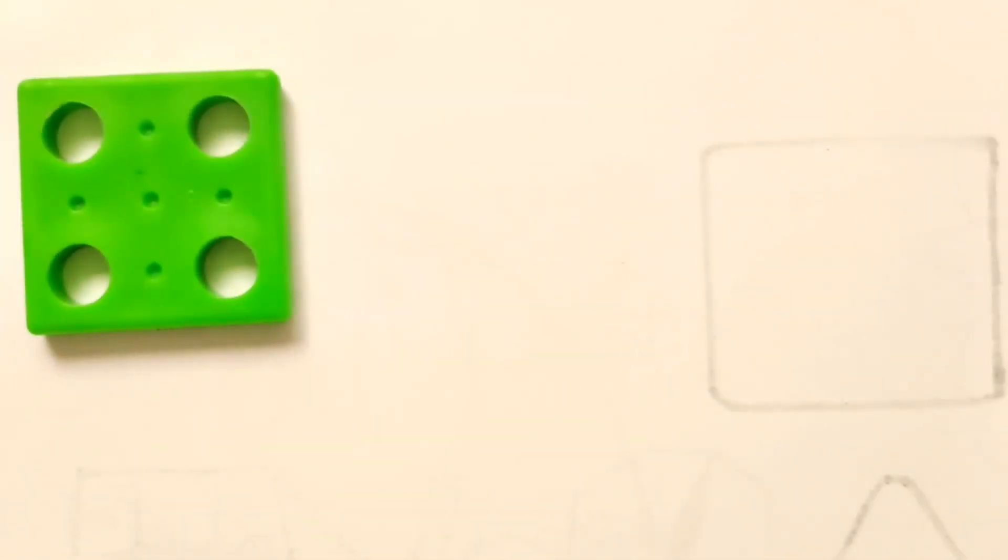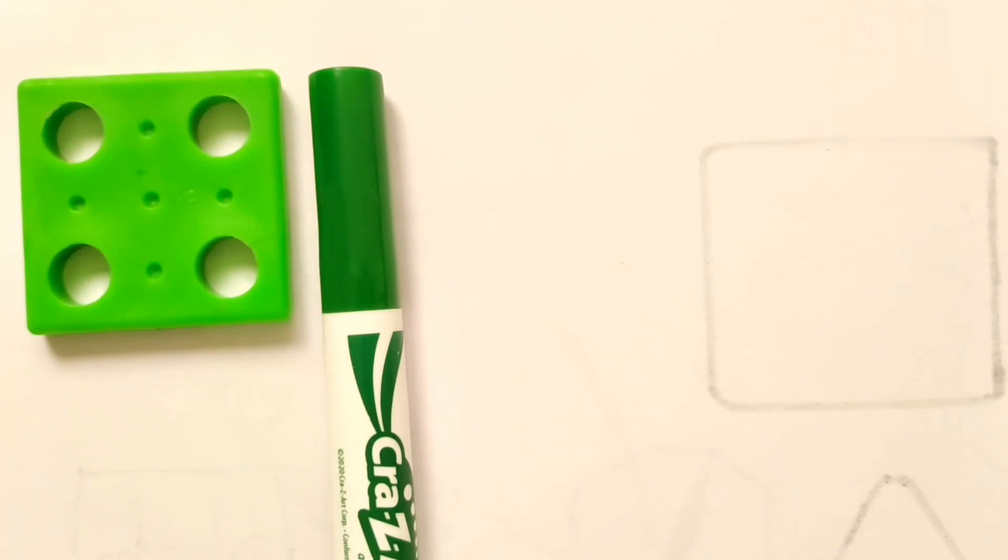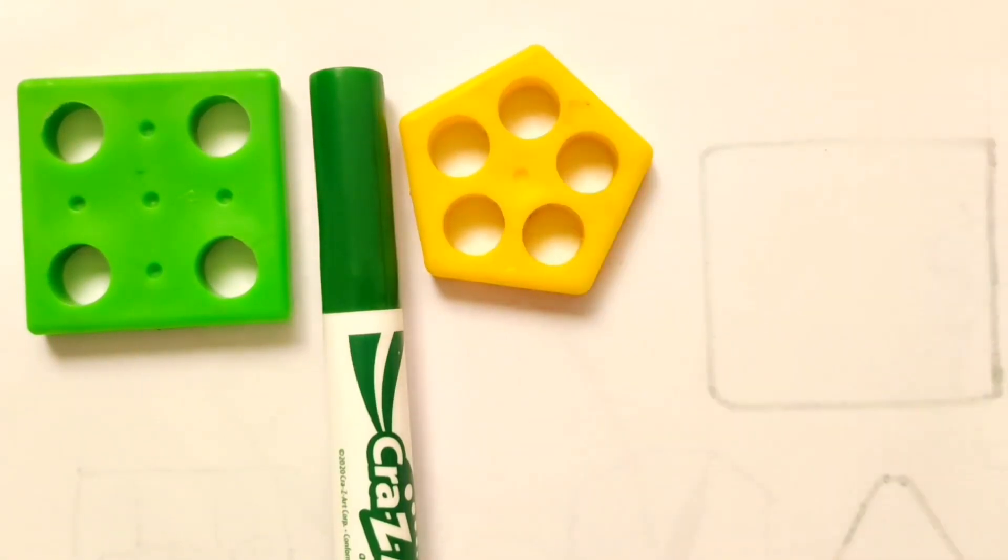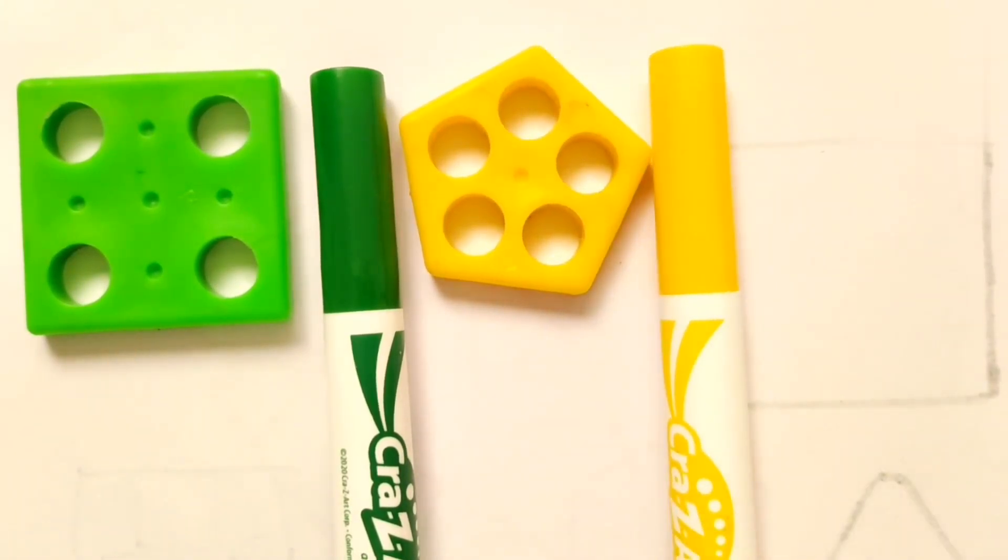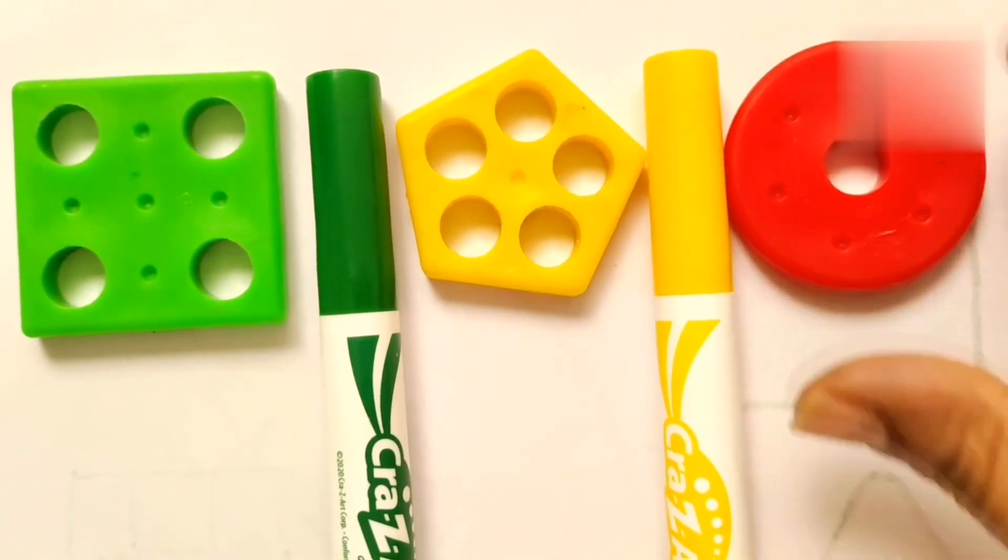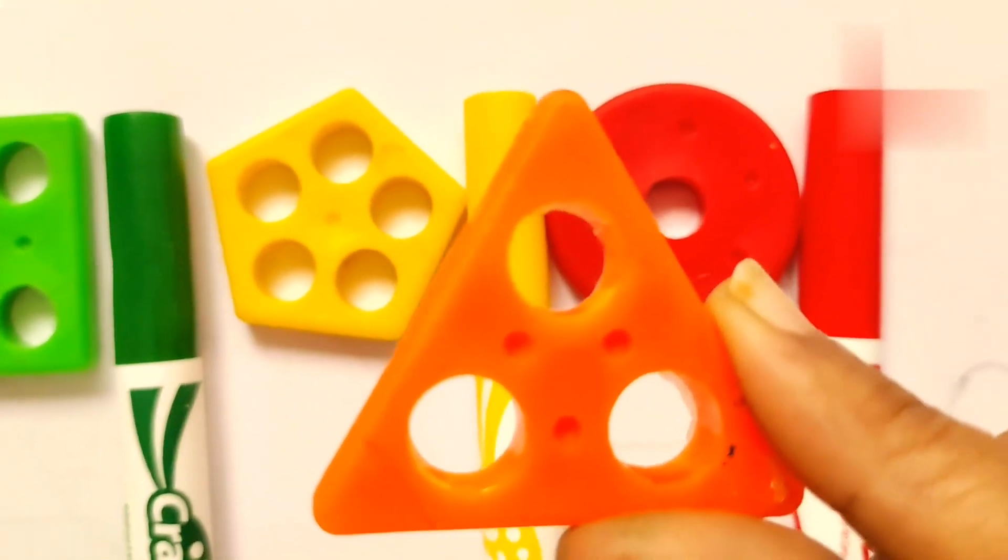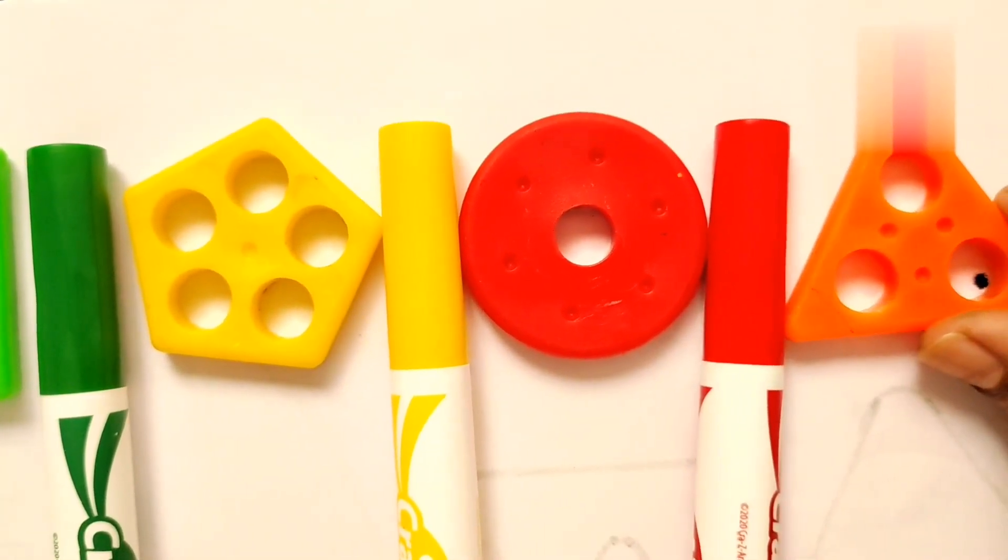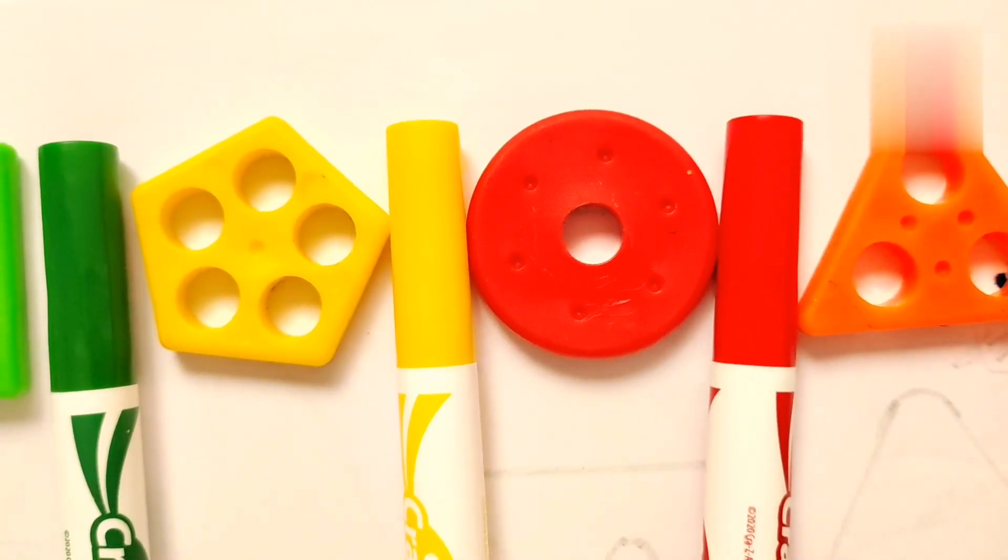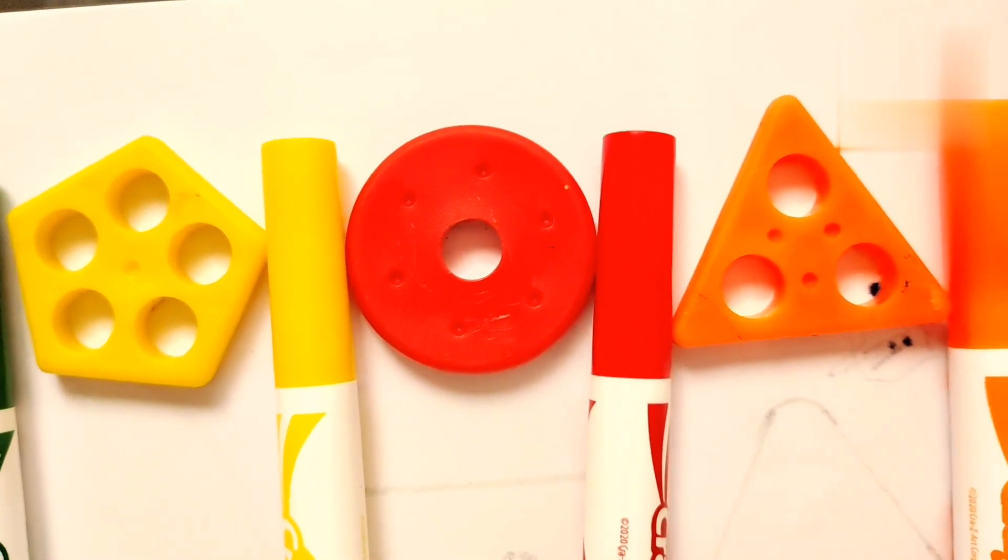This is a square, and this is green in color. This is a pentagon, yellow color. This is a circle, red color. This is a triangle, and this is orange in color.